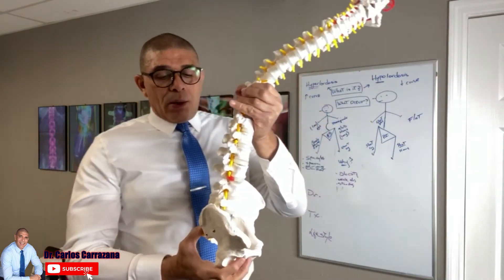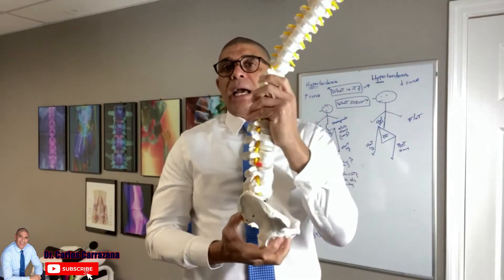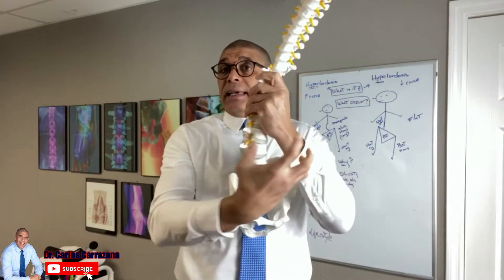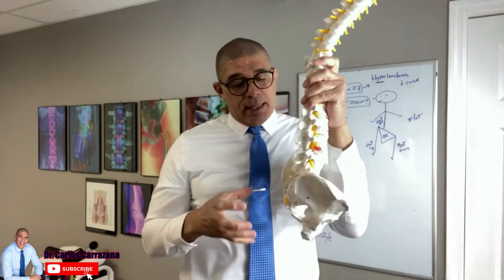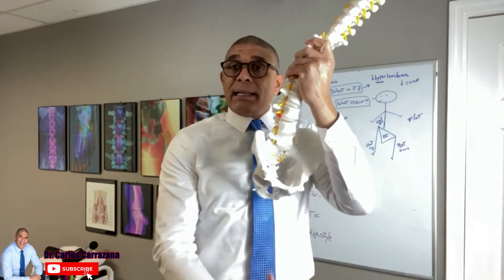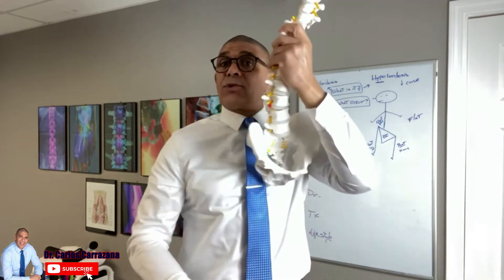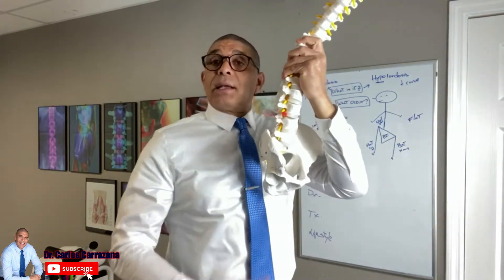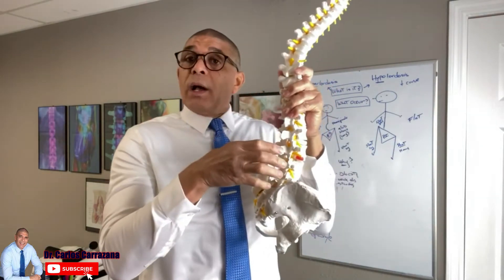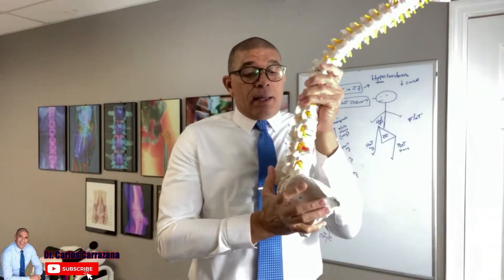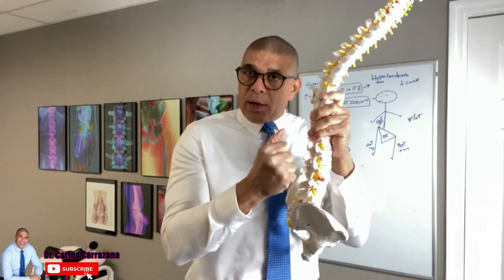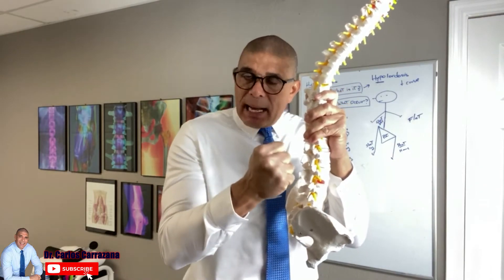Now let's talk about hypolordosis — it's different. The abs are going to be tight, and the glutes and hamstrings are going to be tight. But the quads — the muscles in the front of the legs — they're going to be long and soft, as well as the back muscles. They're going to be more long and stretched out; they need to be tightened up.